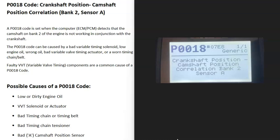And so what is a P0018 code? Well, it's a crankshaft position, camshaft position correlation, bank 2, sensor A.